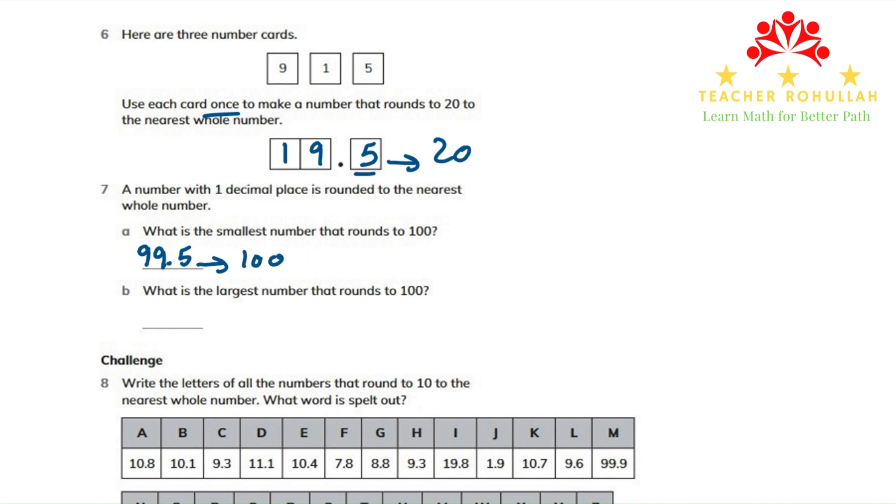In part b, it says, what is the largest number that rounds to 100? The largest number is 100.4. Because if it's 100.5, it will round to 101. So this number, which is 100.4 rounds to 100.